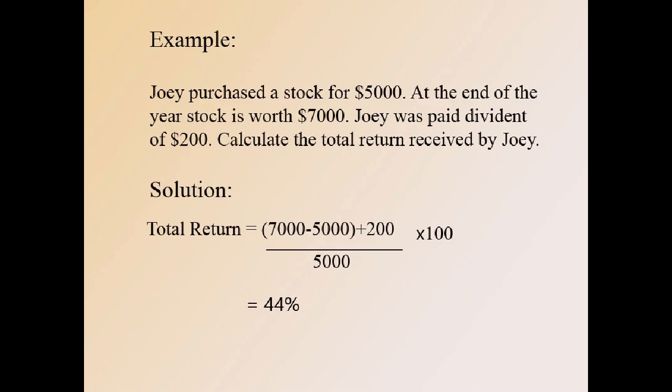Here is an example of rate of return. Joy purchased a stock for $5,000; at the end of the year the stock is worth $7,000, and Joy was paid a dividend of $200. Here, $5,000 is the buying price (Pt-1), $7,000 is the price at the end of the year (Pt), and $200 is the dividend (Dt). The answer we get is 44%.